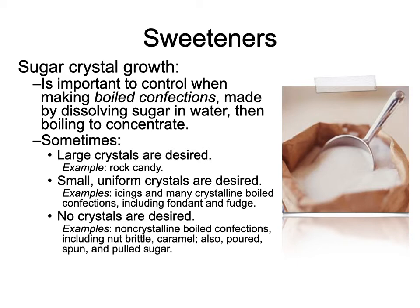It's important to control crystal size when making boiled confections — made by dissolving sugar in water and boiling into a concentrate. We make a sugar syrup, heat sugar and water together to dissolve and melt the sugar into liquid form, then use things like glucose syrup to keep crystals very small. Sometimes we like large crystals like rock candy, but for cake icing or fondant we want crystals very small so they don't feel rough or grainy.